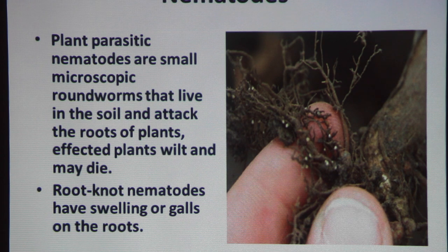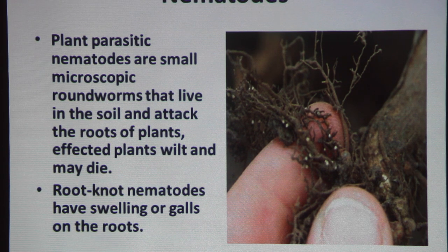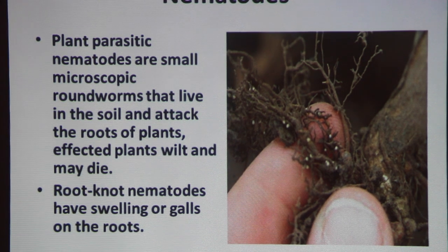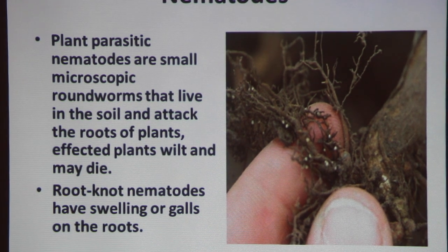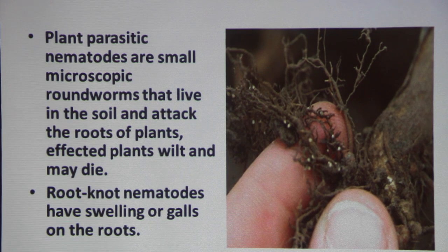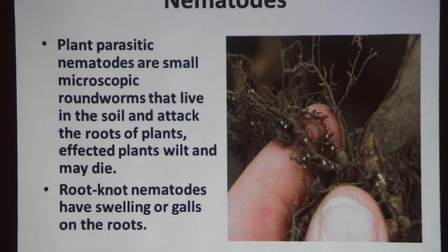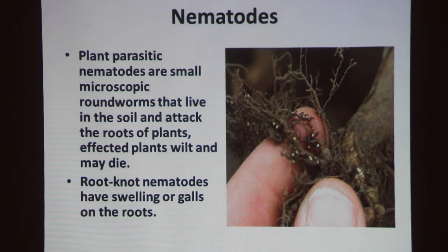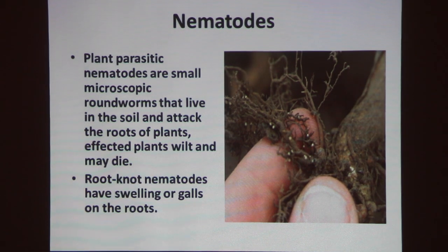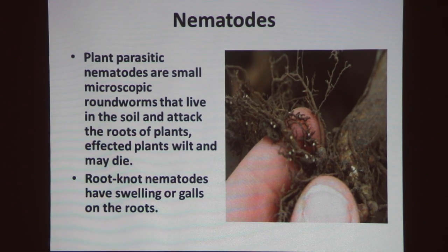Nematodes usually build up if you don't have good crop rotation. If you plant bell pepper after bell pepper after bell pepper, you get problems. The answer for nematodes is crop rotation, which is a cultural management practice. Many people here have problems with cucumbers because they plant cucumber after cucumber two, three, or four times, and then they get nematode problems.